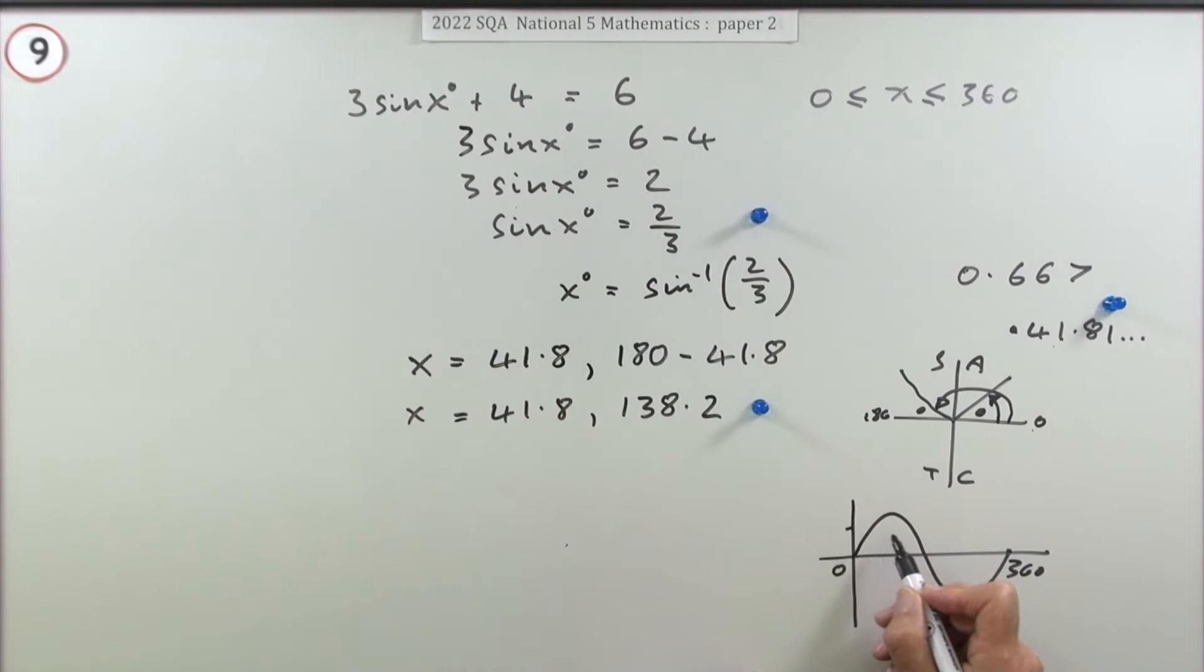For this answer of two-thirds which is up here somewhere, these are the two answers, and that's symmetrical. Whatever angle that is will be the same angle back from the halfway, back from the 180. That's why it actually happens: it took 42 degrees to get there, so it'll get back to there when there's still 42 degrees left to get back down to the start again.